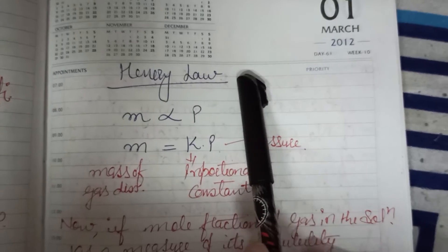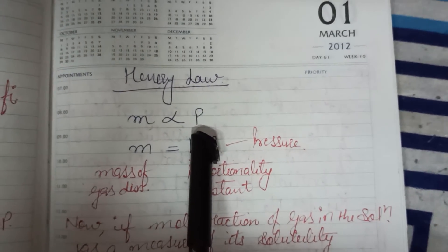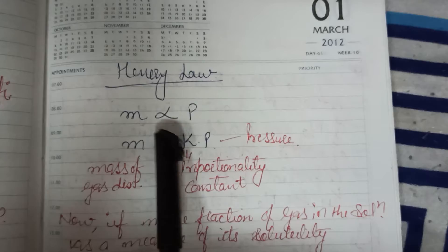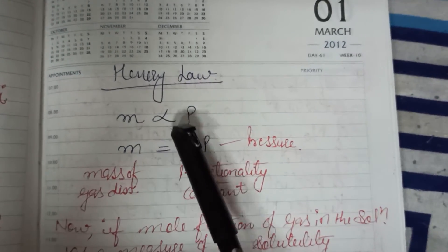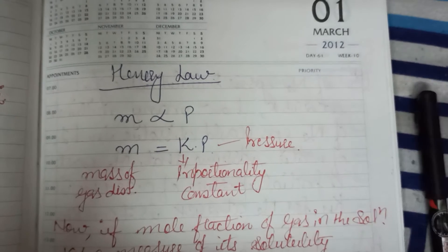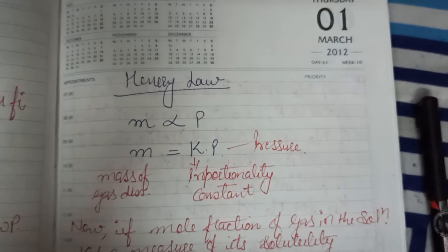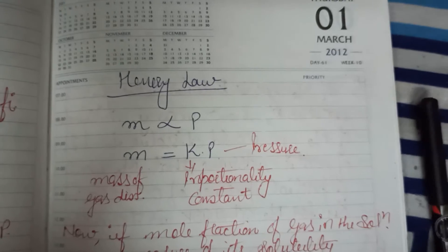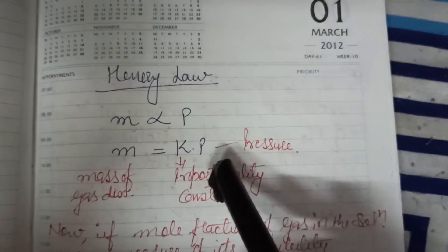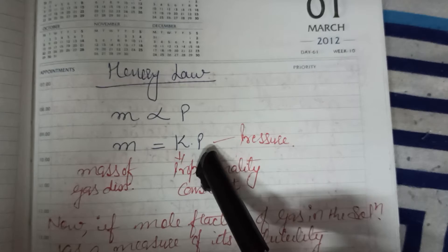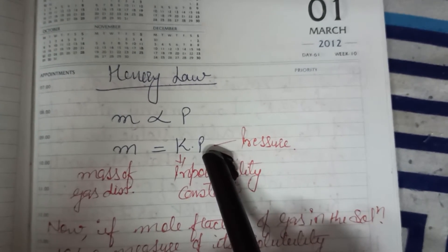Henry's Law's simple statement is that the mass is directly proportional to the pressure. The mass of any gas which is directly proportional to the pressure — suppose you have to dissolve a gas in a liquid. So the mass of any gas that will dissolve depends on the pressure applied. The mass of gas dissolved is directly proportional to the pressure applied.